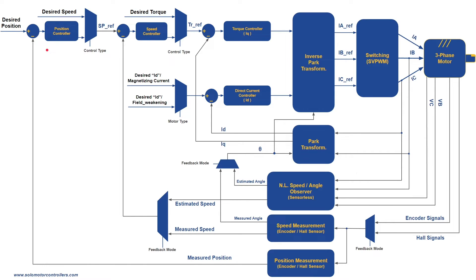Our focus today is on the torque controller, speed controller, and position controller. The torque controller is closest to the motor, providing and controlling torque at the fastest possible update rate. The speed and position controllers handle velocity and position control respectively. If you use torque control, you only use the torque controller and direct current controller. With speed control, you add the speed controller PI. With position control, it cascades further — the position controller commands the speed controller, and the speed controller commands the torque controller.